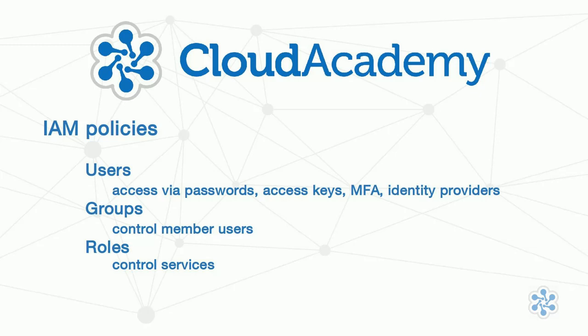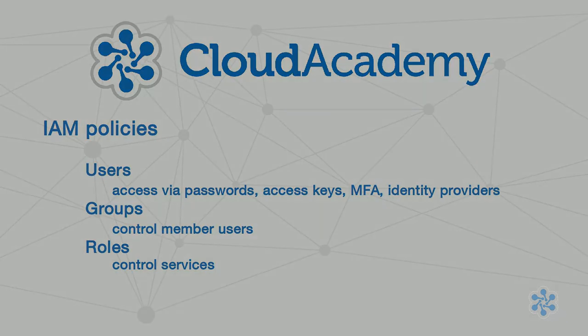A role is not associated with a user or a group, but with a service, like an EC2 instance. So the instance will be assigned specific privileges and limitations, so that any service running on the instance — let's say a web server running on an EC2 instance — will be limited or opened up by the content of the role associated with this instance. The bottom line is, IAM policies are meant to control the behavior of each principle.